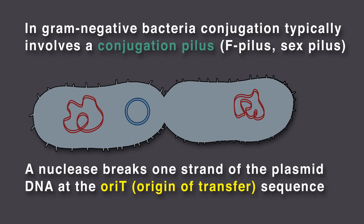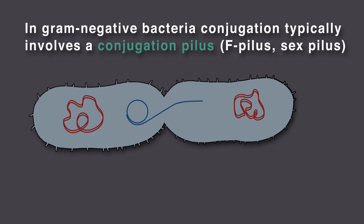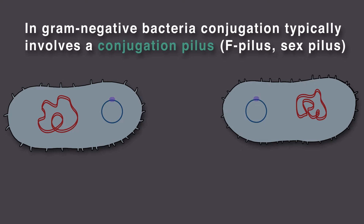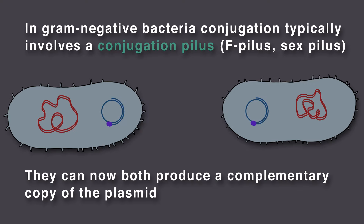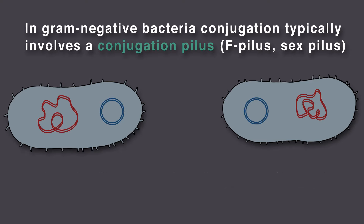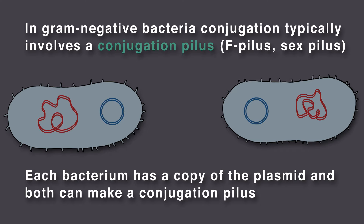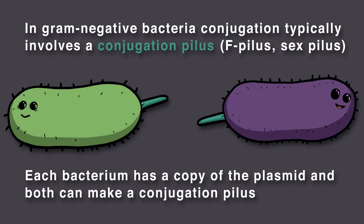A nuclease breaks one strand of the plasmid DNA at the ori-t, or origin of transfer site. The nicked strand enters the other bacterium while the other strand remains behind in the donor. They can now both produce a complementary copy of the plasmid, so the DNA is double-stranded again. Now each bacterium has a copy of the plasmid, and both can make a conjugation pilus.